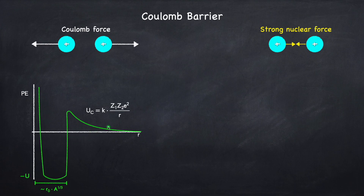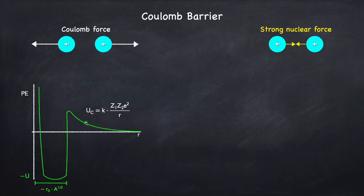If it doesn't have enough energy, it'll just roll partway up the hill and then roll back, which corresponds to the two nuclei coming together and then repelling due to the Coulomb force. Now that would be the case in classical mechanics — in order to get over the hill, you need at least enough energy. But this is a quantum mechanical process, and in quantum mechanics you don't actually have to have enough energy to get over the hill. You just have to get close to the top. If you're close enough to the top, there is a probability that the ball will just show up at the bottom of the well even though it never had enough energy to get over the top. This is called quantum tunneling, because the ball tunneled its way through the hill.